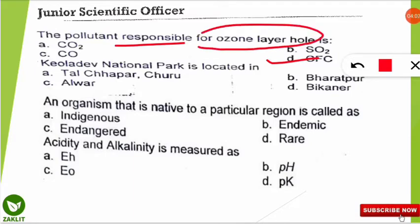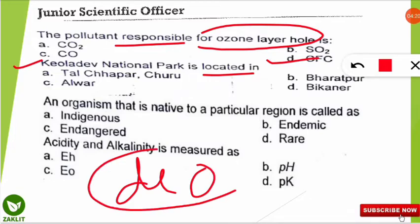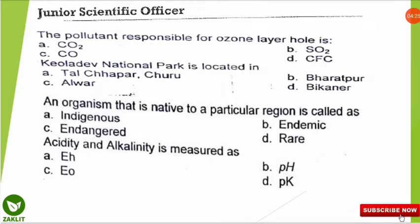The next question is from Rajasthan itself. The question is: which national park is located in which of the following places? The correct option is Keoladeo National Park, which is situated in Bharatpur, Rajasthan. This is also a very important fact.